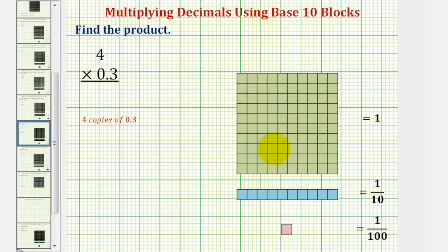The ten by ten block, or the flat, is one whole. The one by ten block, or the long, equals one tenth. And the one by one block, or the bit, is equal to one hundredth.